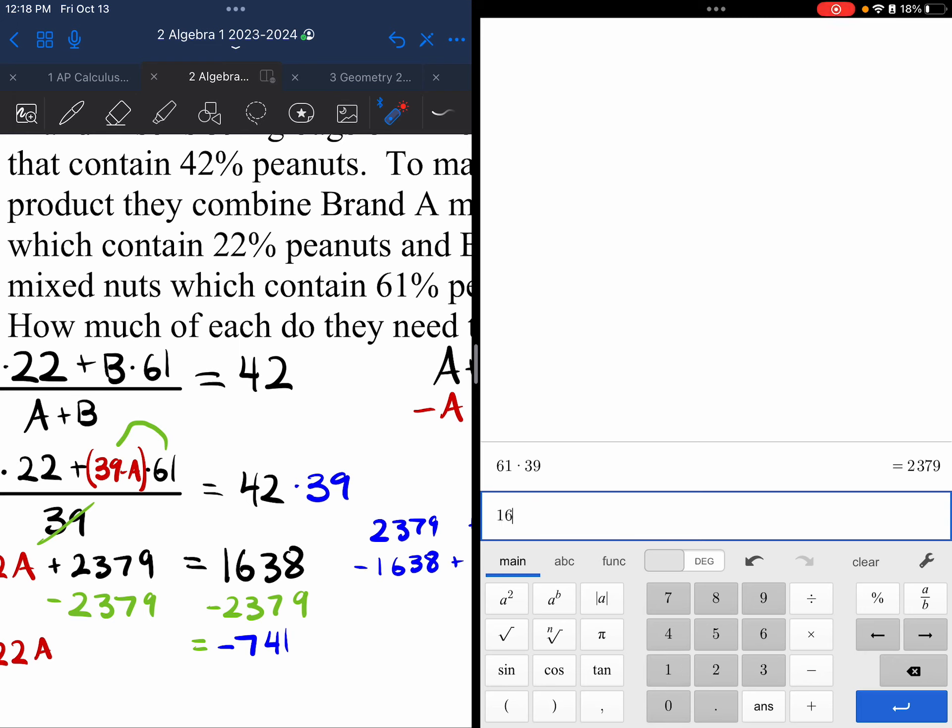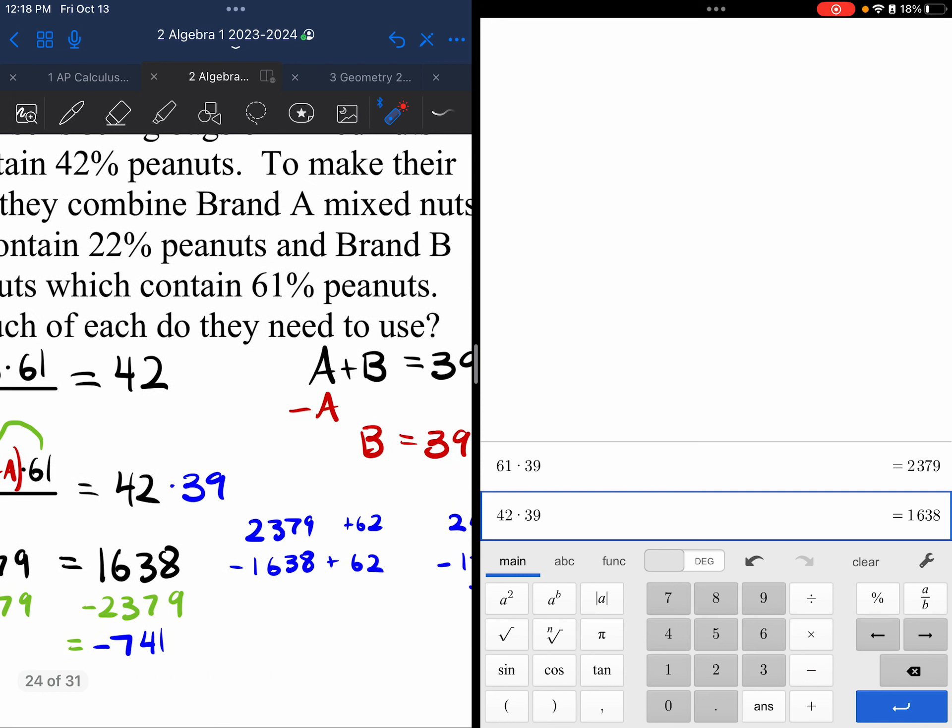So, this is going to be 16, 38. Wait. I want to check that. So, I want to check. What is 42 times 39? 16, 38. Hey, I got you right. I must have done the subtraction problem wrong then. Right? Right?